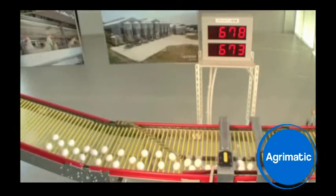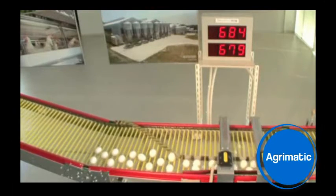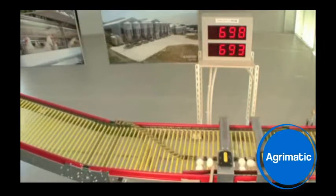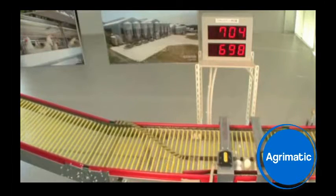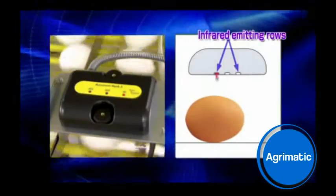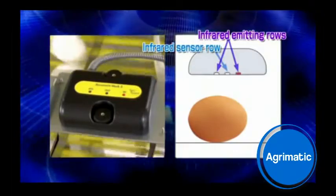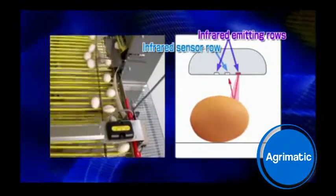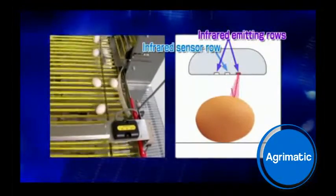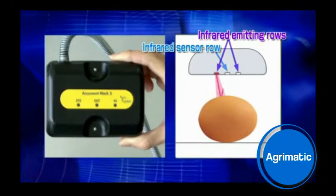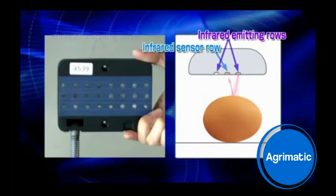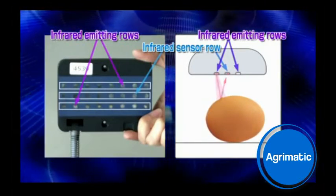The secret to the accuracy is the internationally patented infrared counting system. For twin counting, AccuCount has two infrared emitting rows and one infrared sensor row.